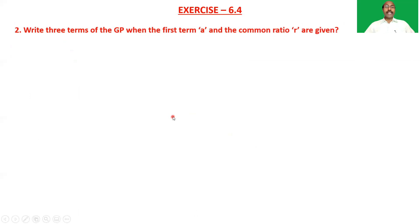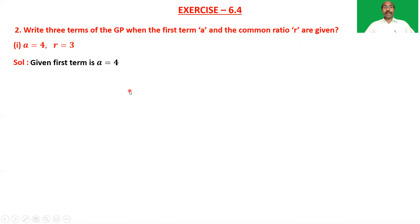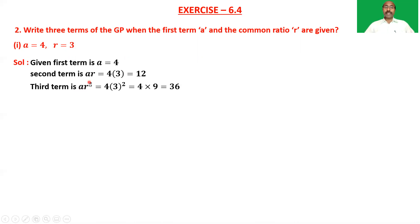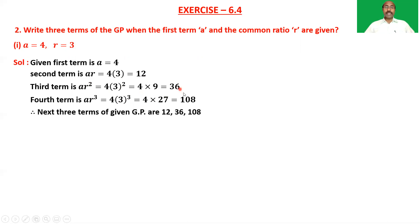Question 2: Write three terms of the GP when the first term 'a' and the common ratio 'r' are given. For a = 4, r = 3: the second term is a·r = 4 × 3 = 12, the third term is a·r² = 4 × 9 = 36, and the fourth term is a·r³ = 4 × 27 = 108. So the next three terms are 12, 36, and 108.